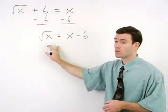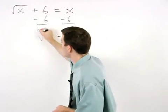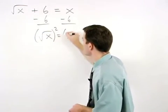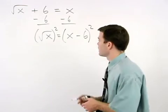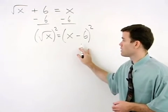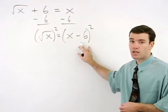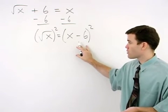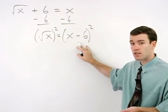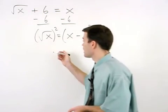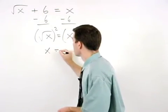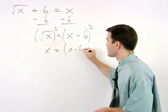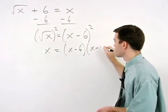Next, to get rid of the radical, we square both sides of the equation. And notice that on the right side of the equation, the x minus 6 squared must be thought of as x minus 6 times x minus 6. So we have x equals x minus 6 times x minus 6.